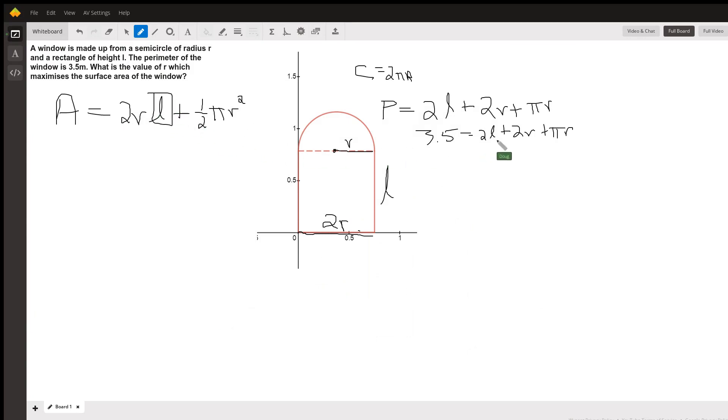So if I could solve this perimeter in terms of L, or solve for L in terms of R, I'd get something like this: 3.5 minus 2R minus πR divided by 2. That's what L is, depending on R.